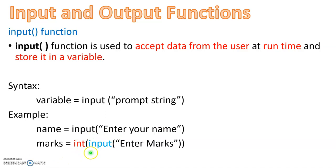For numerical input, we use type conversion. For example: marks = int(input('Enter marks')). When the program runs and prompts 'Enter marks', the user types a number. Since input() always returns a string — a group of characters — we use int() to convert that string into integer data for processing.